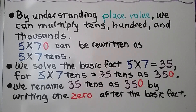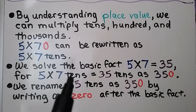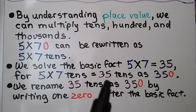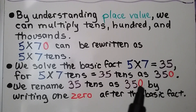5 times 70 can be written as 5 times 7 tens. We solve the basic fact: 5 times 7 is equal to 35, so 5 times 7 tens equals 35 tens, which is 350. We rename the 35 tens as 350 by writing one zero after the basic fact.